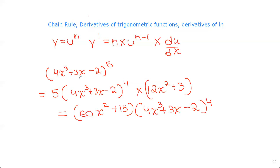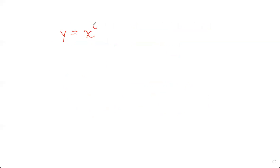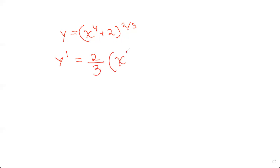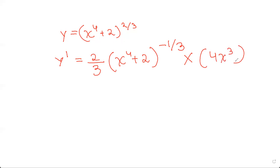We can't leave the bracket like this — we have to differentiate that as well. Now let me give you another example of chain rule. y equals (x⁴ + 2) to the power of 2/3. We have to find y'. So we move the 2/3 down: 2/3 times (x⁴ + 2) to the power of 2/3 - 1, which is -1/3. We can't leave it like this, so we differentiate inside the bracket, giving 4x³. So y' = (2/3)(4x³)(x⁴ + 2)^(-1/3).